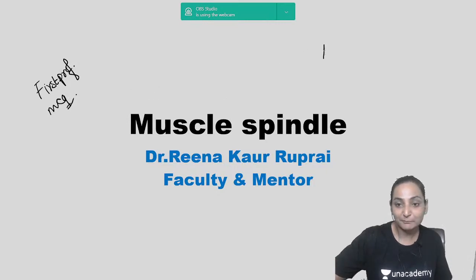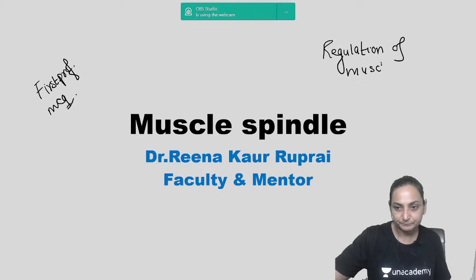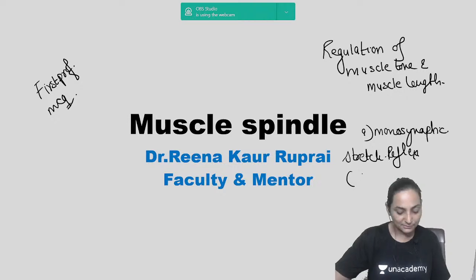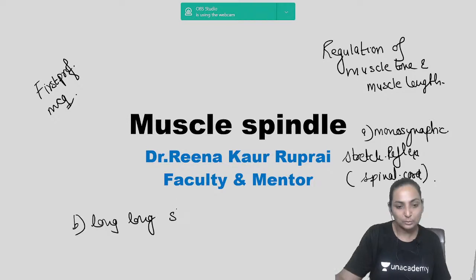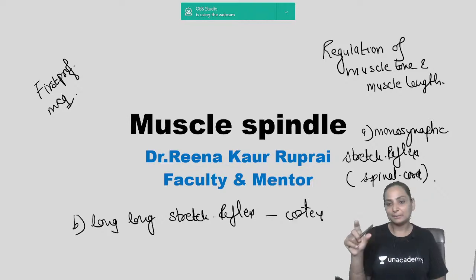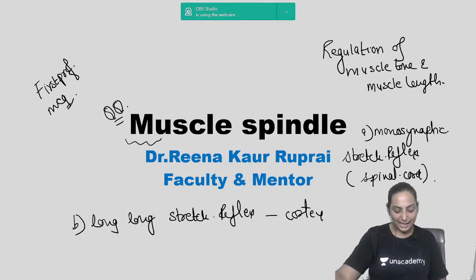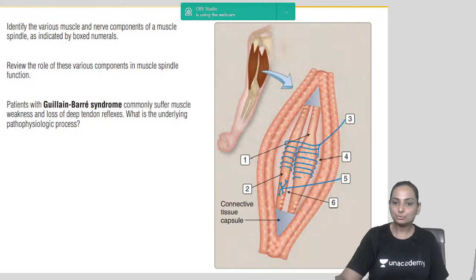When we speak about regulation of muscle tone and muscle length, two things come to mind. First is the monosynaptic stretch reflex, whose integrating center is the spinal cord. The second is the long loop stretch reflex, whose integrating center is the cortex. The receptor for the monosynaptic stretch reflex is the muscle spindle.